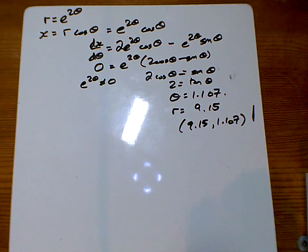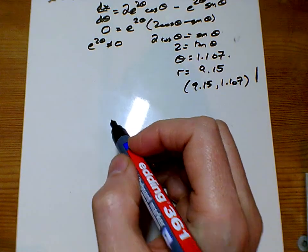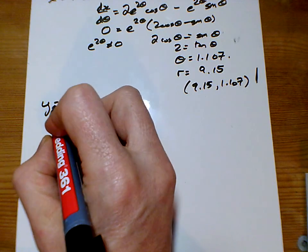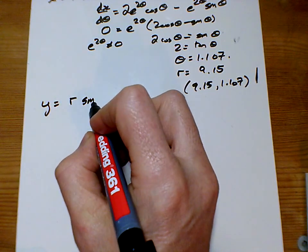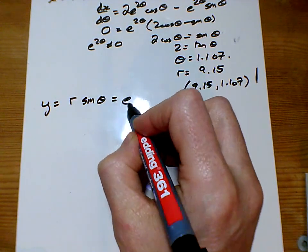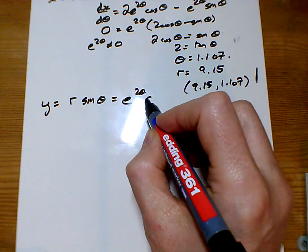So for part B, we now want y. We want to find out what y is. So y is equal to r sine theta, and so we have e to the 2 theta sine theta.